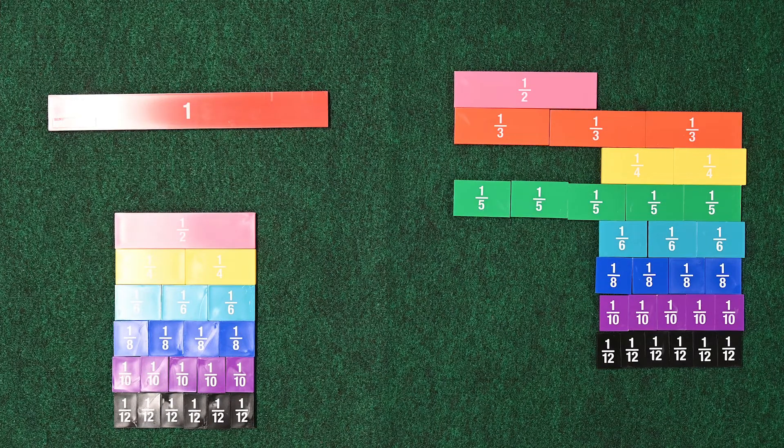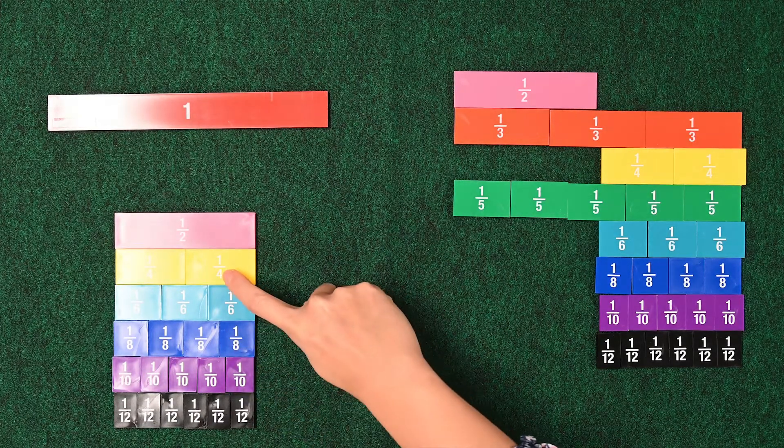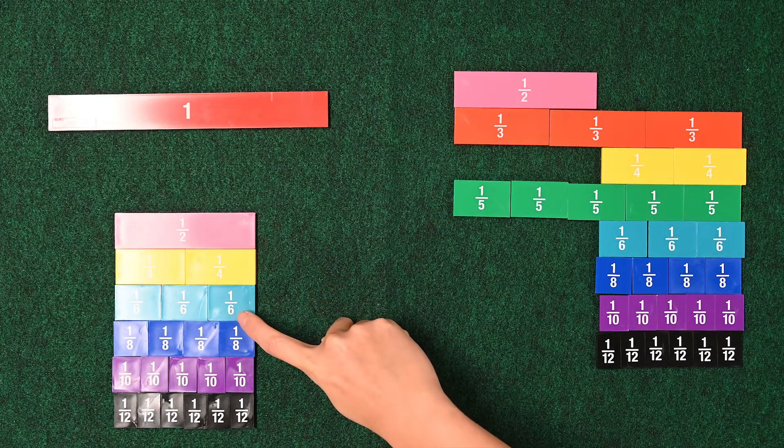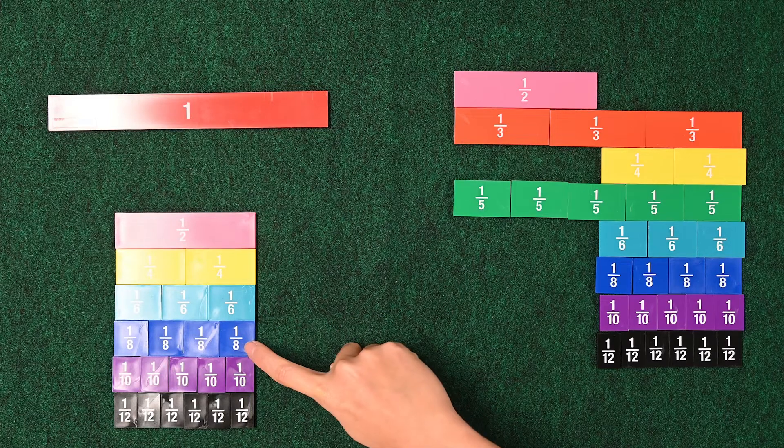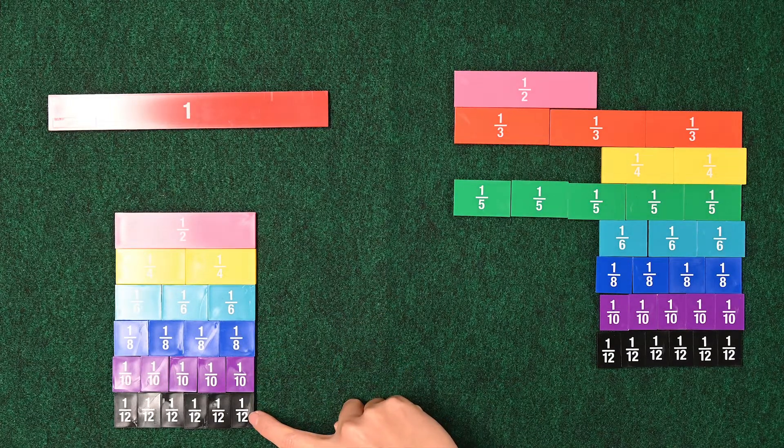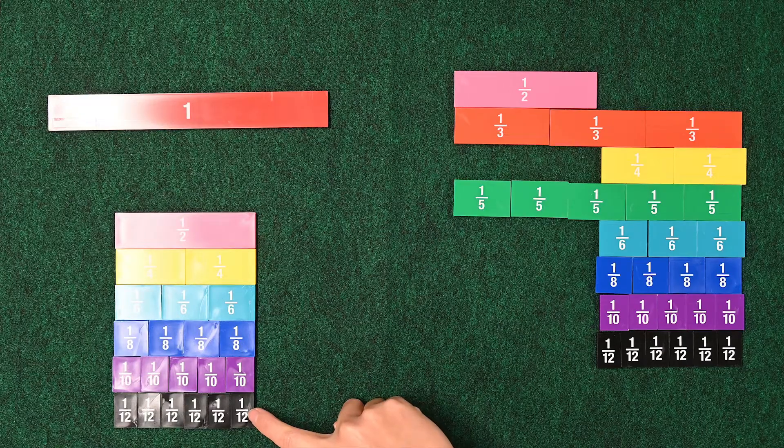But 4 is even. And you can take half of 4 and you get 2. 2 4ths. 6 is even. Half of 6 is 3. 3 6ths. 4 8ths. 5 10ths. 6 12ths are all equal to 1 half.